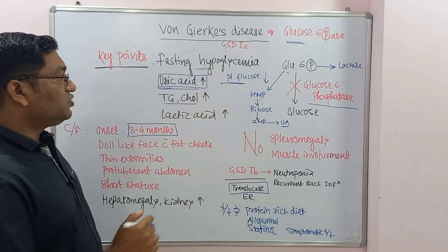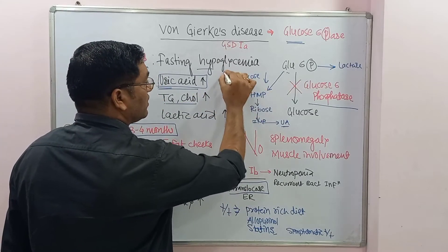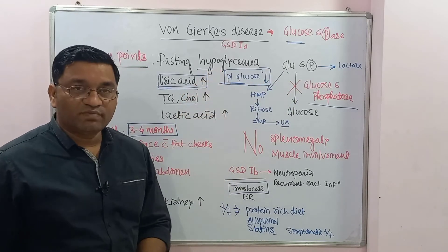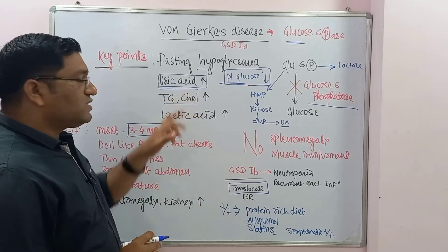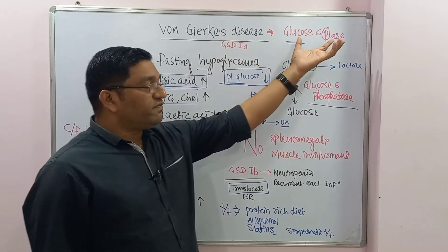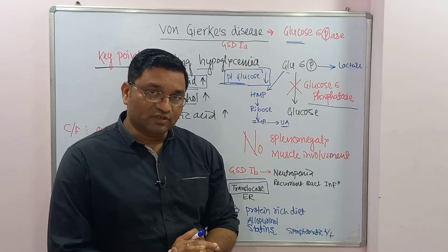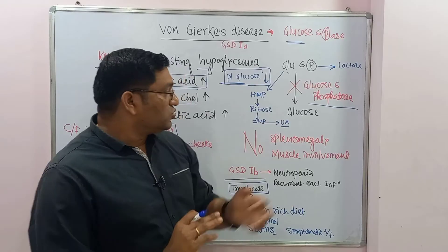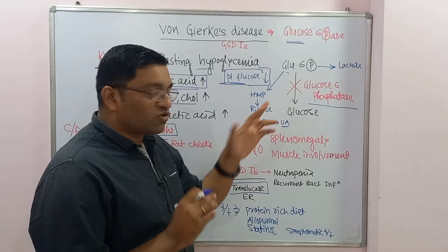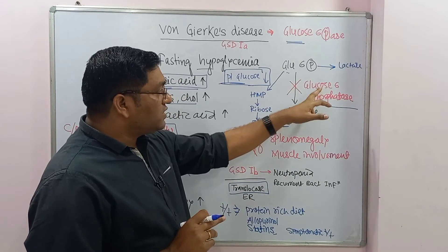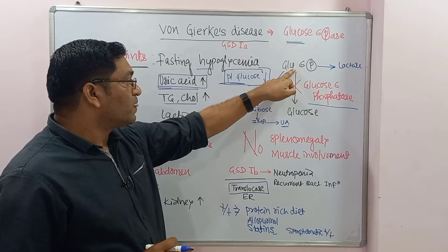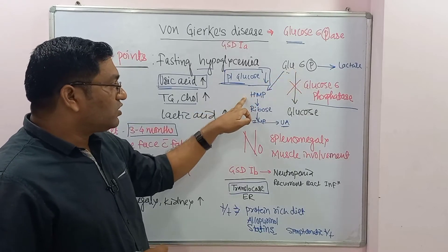Laboratory diagnosis shows a decrease in plasma glucose level — fasting hypoglycemia is present. There is also hyperuricemia. The principal defect in this disorder is deficiency of glucose-6-phosphatase, the enzyme required for conversion of glucose-6-phosphate to glucose.